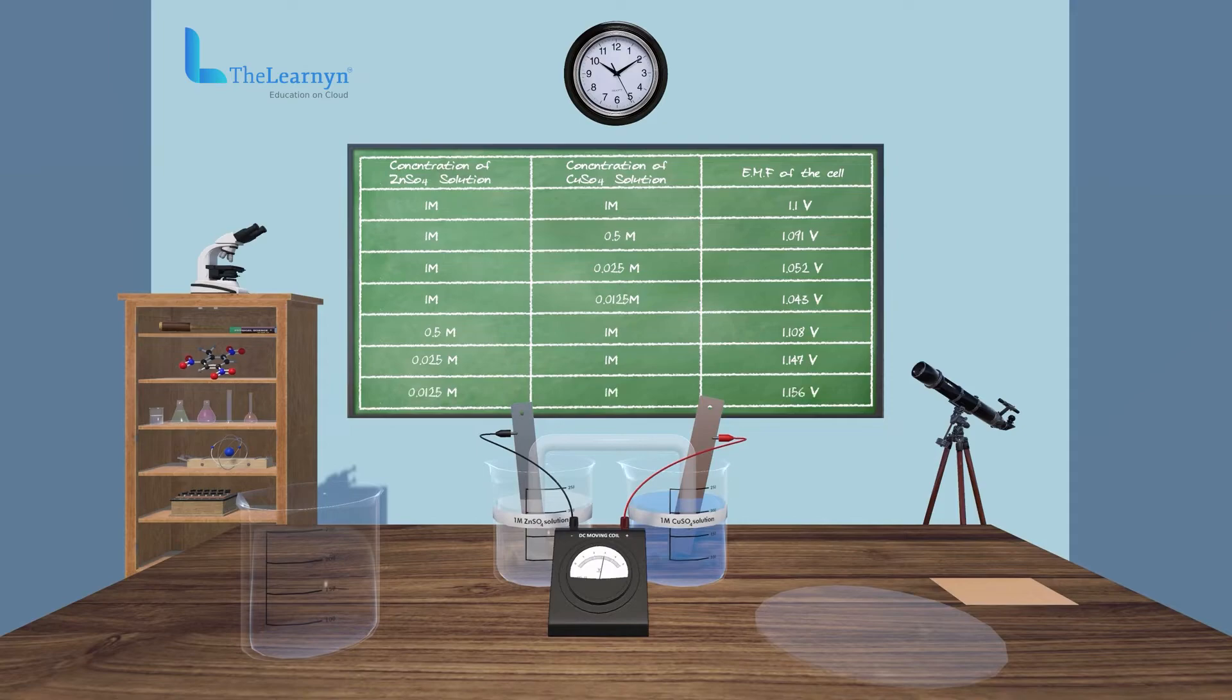From the observations, it is clear that EMF of the cell increases with decrease in concentration of the electrolyte around anode, which is the zinc electrode, and increase in concentration of the electrolyte around cathode, which is the copper electrode.